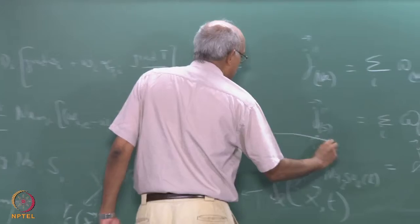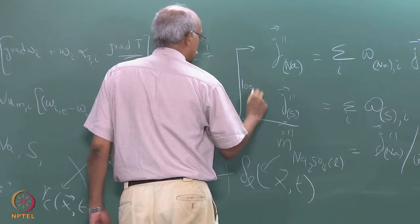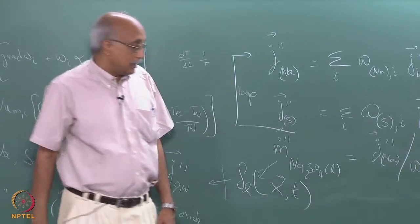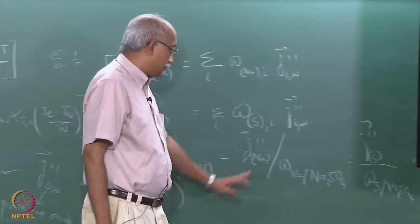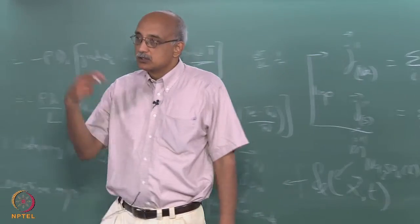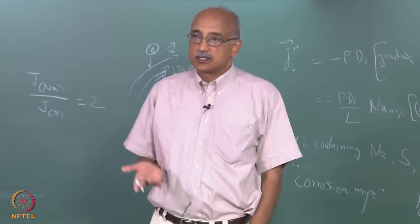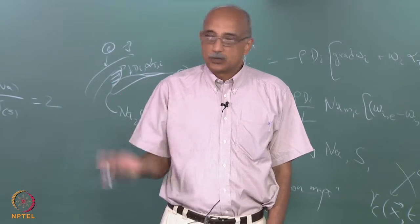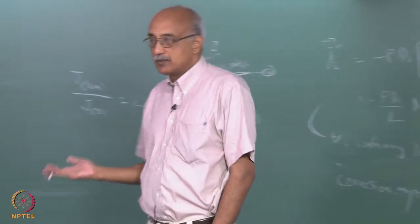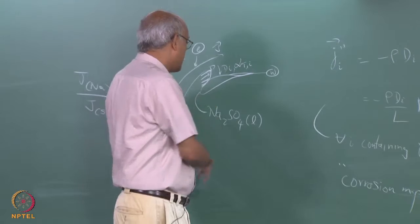The iterative loop is really at this step. Once you have reached a converging condition, you go to the next step. This equality won't happen unless you have done this iteration and reached a self-consistent condition where the flux of the sodium element and the flux of the sulphur element are in the same ratio as their stoichiometric ratio in the film.